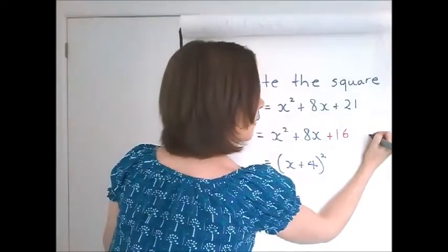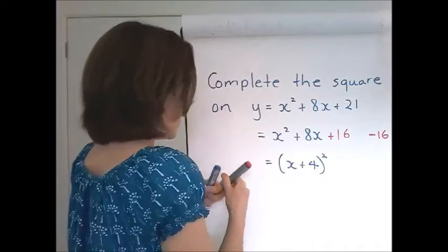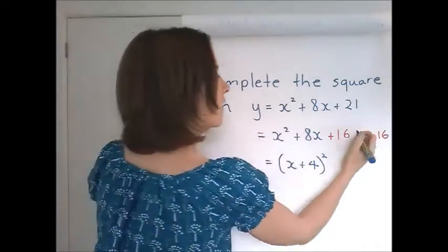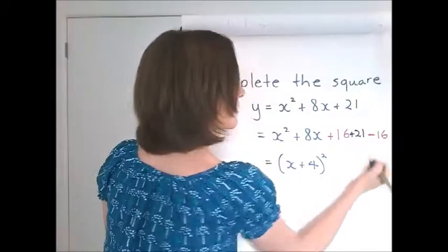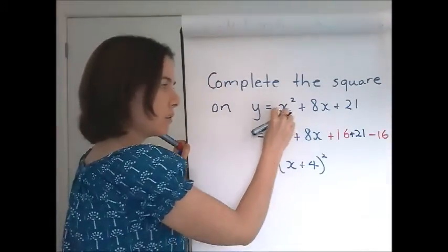I've added that in myself. I also must subtract it. And to keep it equal to the first line, I need my 21 in there. So the second line is now equal to the first line.